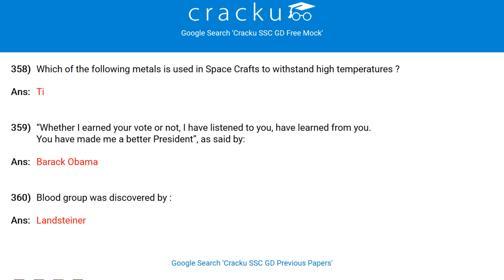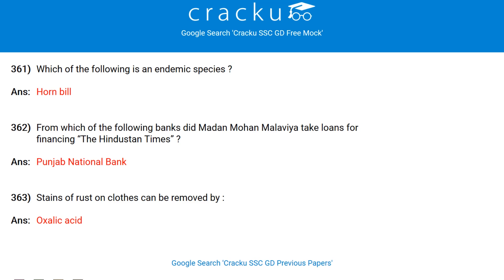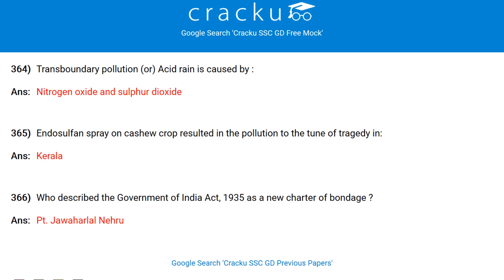'Whether I earned your vote or not, I have listened to you, I have learnt from you, you have made me a better president' is said by Barack Obama. Blood group was discovered by Landsteiner. Which of the following is an endemic species? Hornbill. From which bank did Madan Mohan Malaviya take loans for financing the Hindustan Times? Punjab National Bank. Stains of rust on clothes can be removed by oxalic acid. Transboundary pollution or acid rain is caused by nitrous oxide and sulphur dioxide.